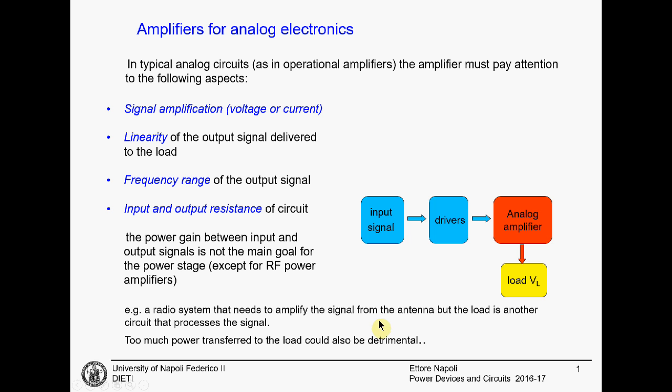A typical example: you have a radio system that wants to amplify the signal from the antenna. This signal is very, very small — microvolts on the antenna — and you need some volts on the output, on the loudspeaker, in order to drive the loudspeaker. This is the typical processing chain that you studied in analog electronics.